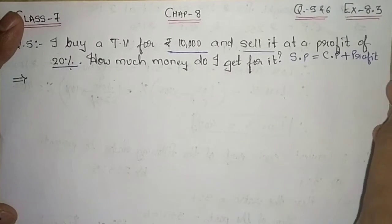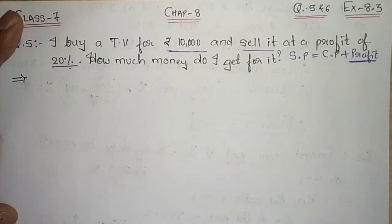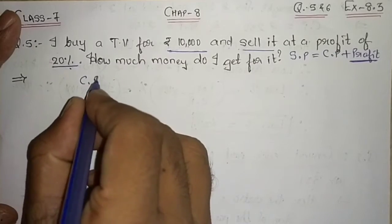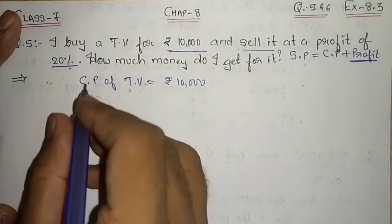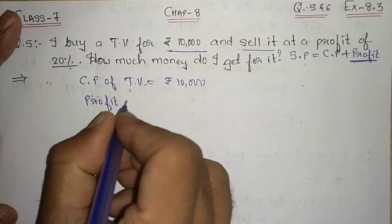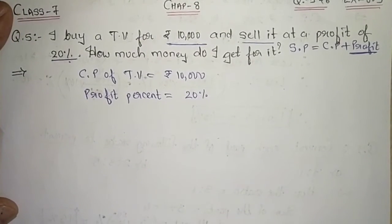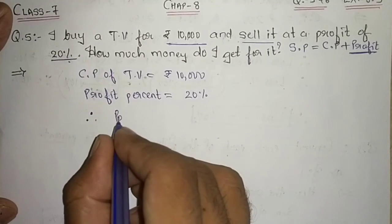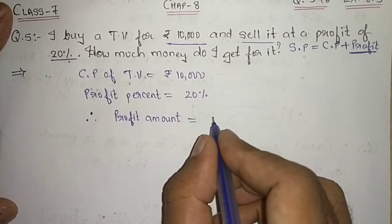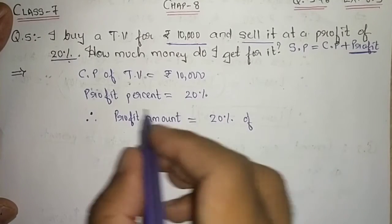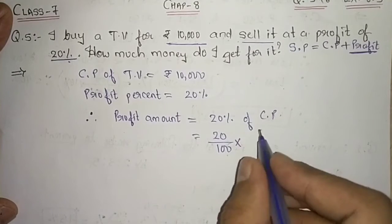Here the profit percent is given but I need the profit amount, which I don't have. So I will write: cost price of TV equals rupees 10,000, profit percent equals 20 percent. From the profit percent I can find the profit amount. Profit amount equals 20 percent of CP, which is 20 divided by 100 multiplied by 10,000.